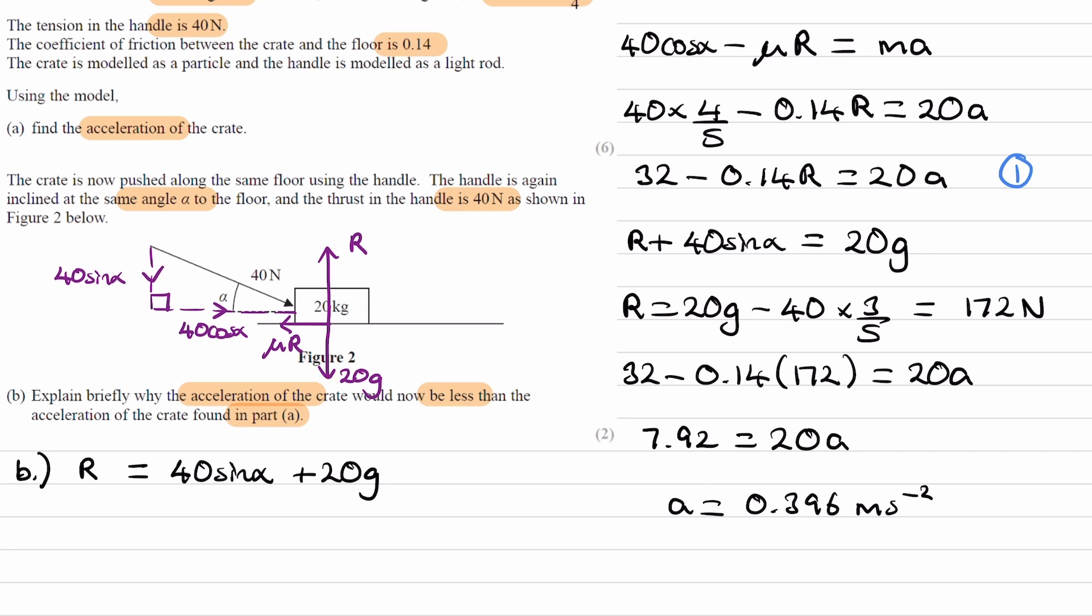Now let's compare this to the equation that we had before for R. Before, R plus 40 sin alpha equals 20g, which rearranges to R equals 20g minus 40 sin alpha. Here we have R equals 20g plus 40 sin alpha. That means that this reaction force will be bigger than what it was before. Which should make sense. If we're pushing the object into the ground, the reaction force upwards that opposes that force should increase.